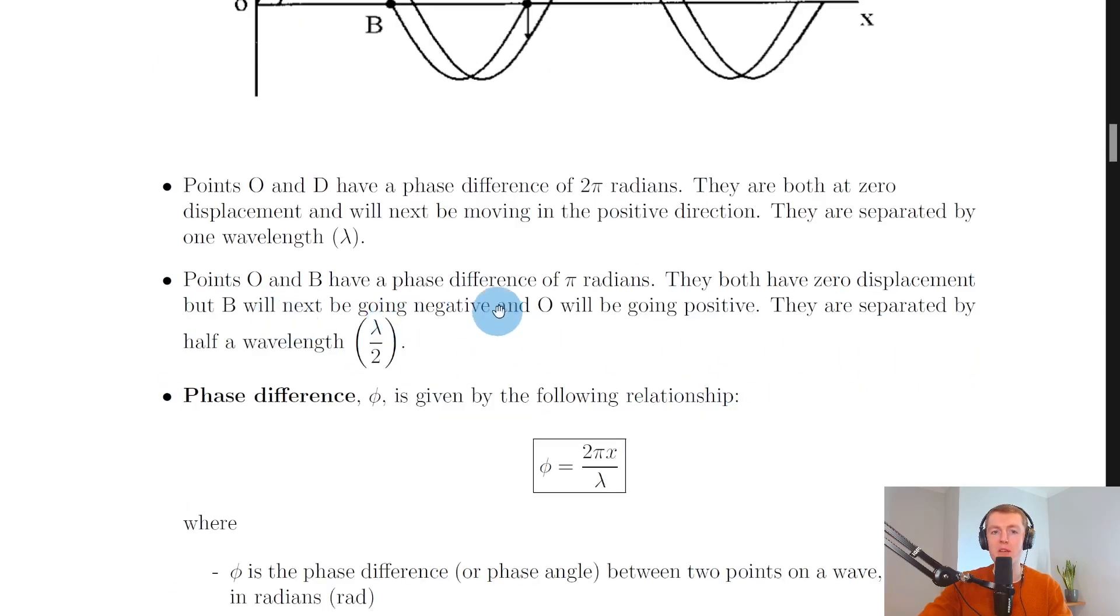Points O and B have a phase difference of pi radians. They both have zero displacement but B will next be going negative and O will be going positive.